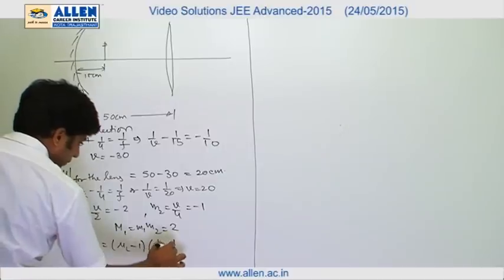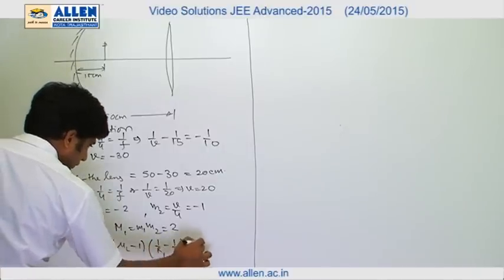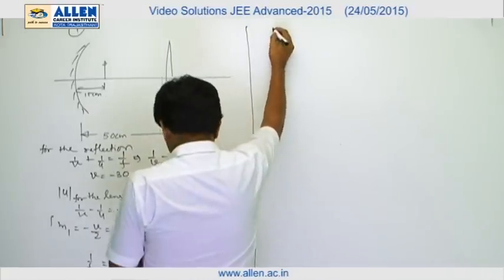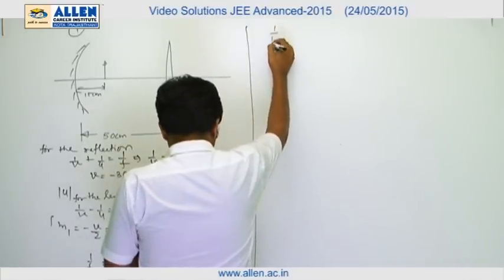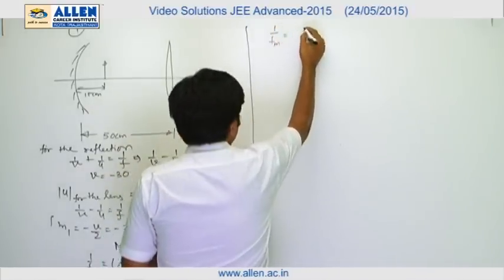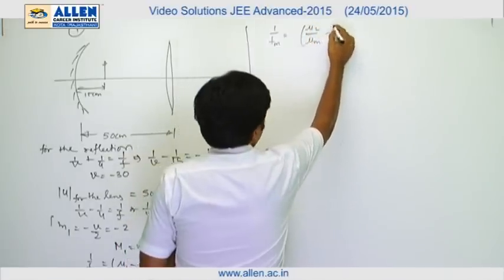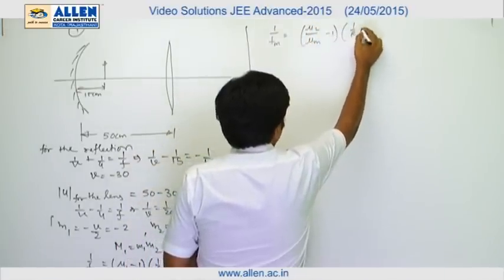But in the medium, focal length will be given by the formula 1 upon fm equals to mu_l by mu_m minus 1, 1 by r1 minus 1 by r2.